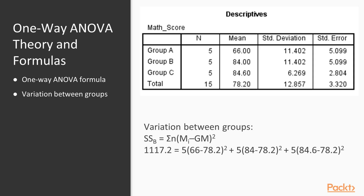Why is this important? We're looking at two sources of variation. Within groups, we pool the average variation across groups. If the treatment had no effect, the group means should be fairly similar to each other — really no more different than the variation within each group. So the ratio of between-groups variation to within-groups variation should be approximately one if there is no difference. But if the treatment did work, the between-groups variation should be very different from the within-groups variation, and that ratio will be significantly larger than one.